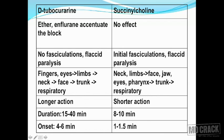With D-tubocurarine, a competitive blocker, there are no fasciculations and there is flaccid paralysis. With succinylcholine, being a partial agonist, you have initial fasciculations followed by flaccid paralysis. The order of paralysis with D-tubocurarine is: fingers first, then eyes and limbs, then neck, face, trunk, and respiratory muscles. With succinylcholine it is: neck first, then limbs, face, jaw, eyes, pharynx, then trunk, and finally respiratory muscles. D-tubocurarine has a long duration of action of 15 to 40 minutes, and succinylcholine is short acting at 8 to 10 minutes.